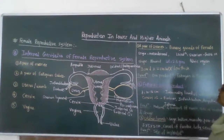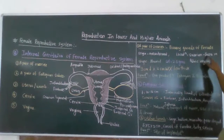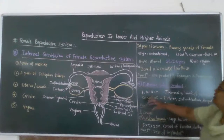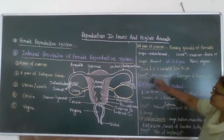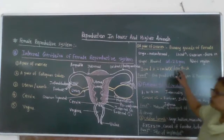Ovaries are called the primary sex organ of a female, also called the primary gonads of a female. Their origin is mesodermic origin. They are located in the ovarian fossa of the pelvic region. Their shape is almond-shaped and their weight is about 2.8 grams. Their dimensions are about 3 × 2 × 1 cm — length, width, and thickness respectively.